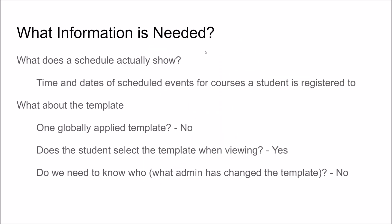When we create the domain model we need to think about what information is actually needed. What does a schedule actually show? Probably the time and dates of scheduled events for a course a student is registered to. What about the template — is it one globally applied template? Does a student select the template when viewing? Do we need to know what admin has changed the template? This is typical of good domain modeling: you get a lot of questions about things not specified in the requirements that you need to ask someone or make decisions about. In this case we simply decide that the student will select a template when viewing a schedule, and we do not need to know who has changed a template.